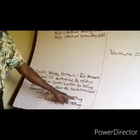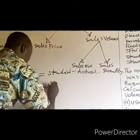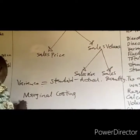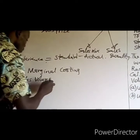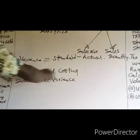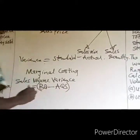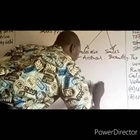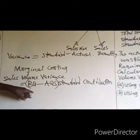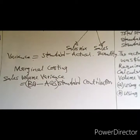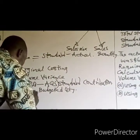Under marginal costing, the emphasis is on contribution. The question may ask you to calculate the sales volume contribution variance — that is the difference between the budgeted quantity and the actual quantity sold, multiplied by the standard contribution. BQ is the budgeted quantity and AQS is the actual quantity sold.